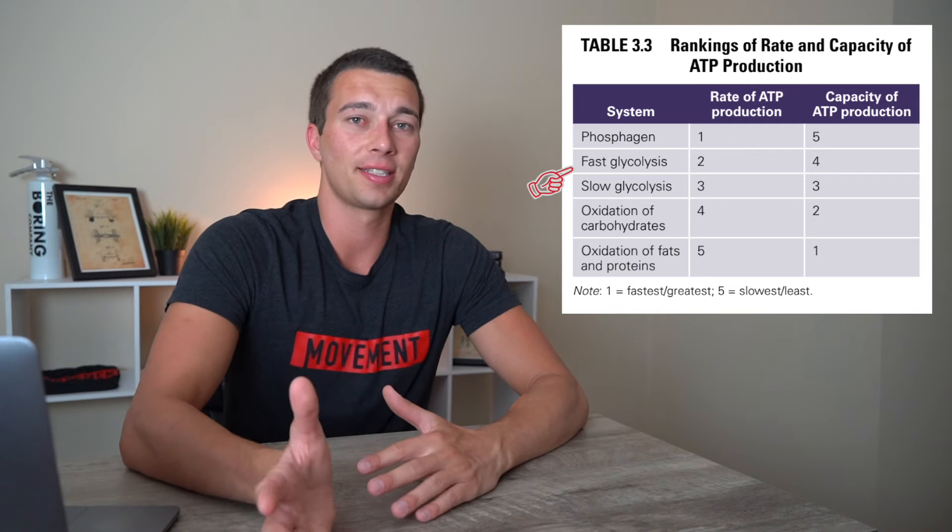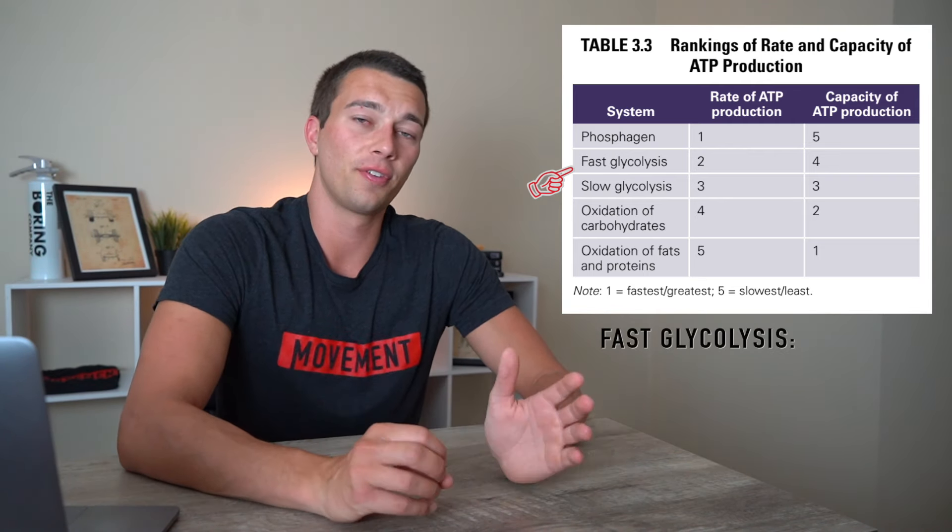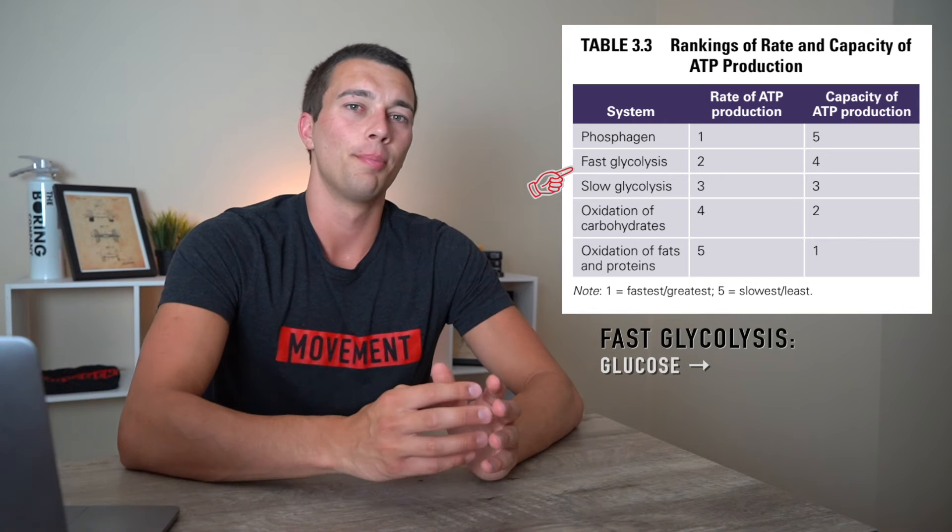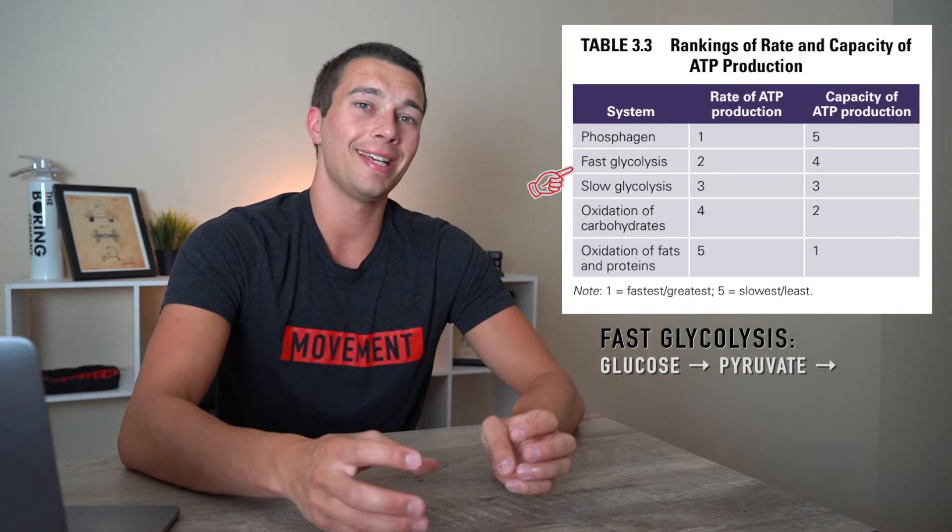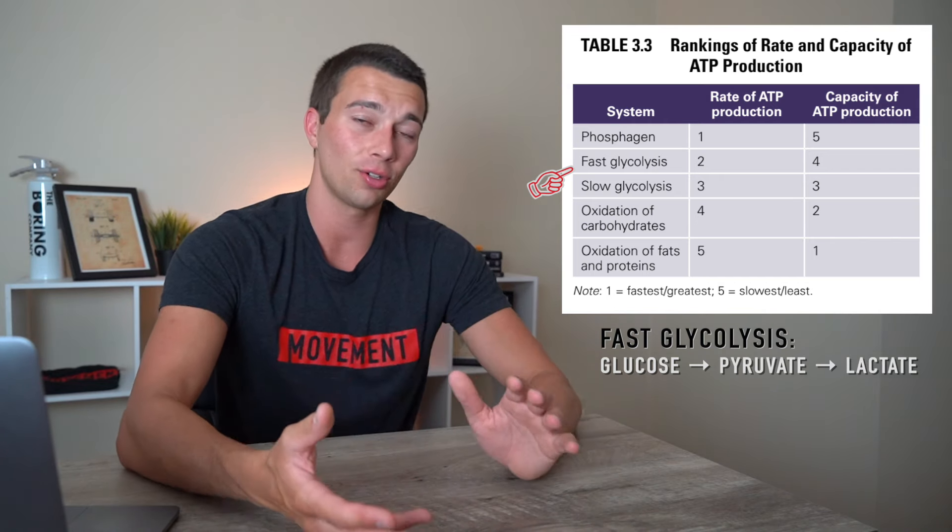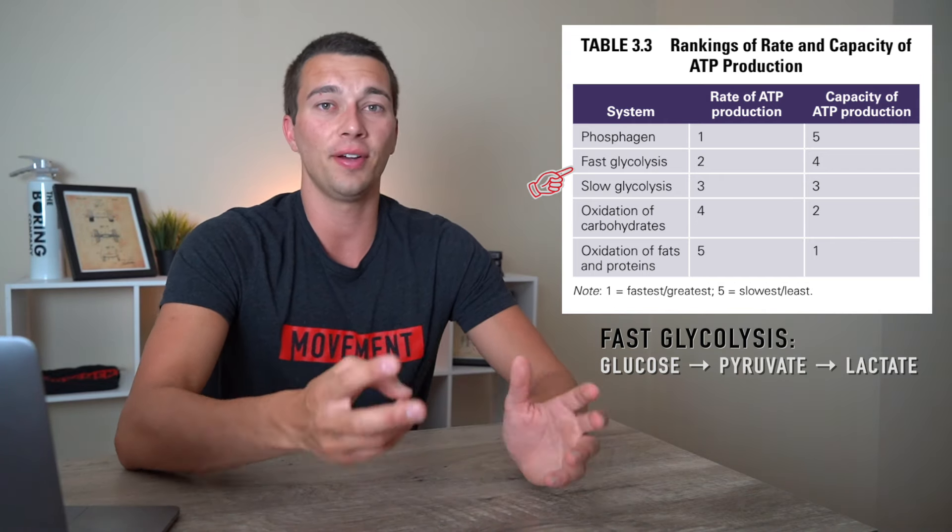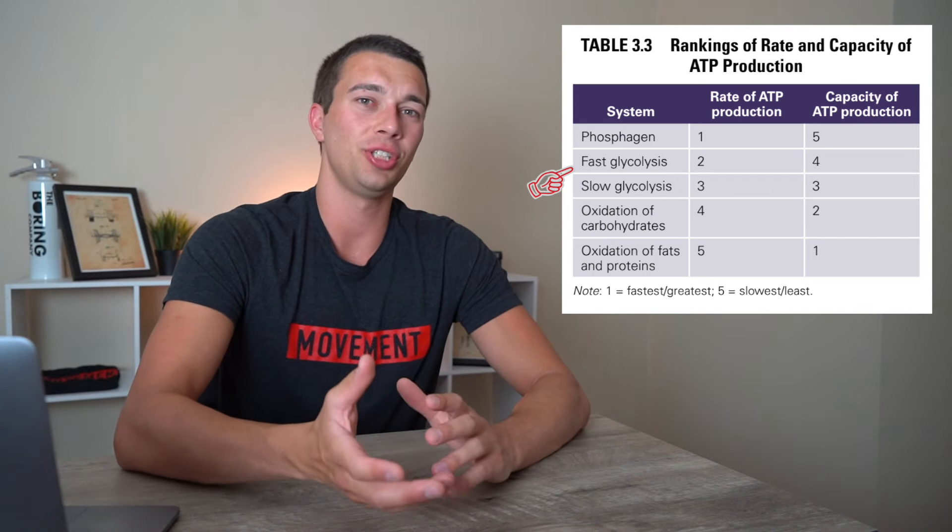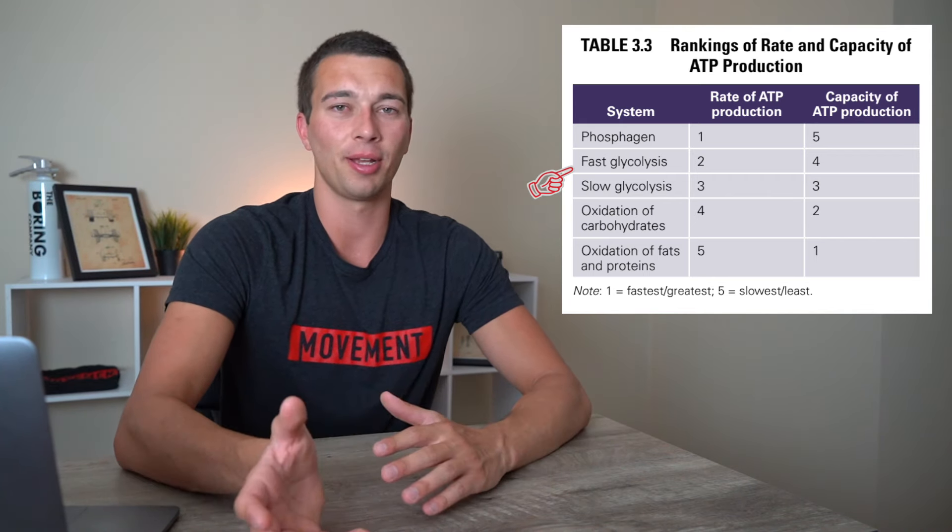The end product of fast glycolysis is going from glucose, a glucose molecule being like a blood sugar molecule, breaking that down into pyruvate and then down into lactate. So that is the system of fast or anaerobic glycolysis, and it's going to give us those two net ATP, as well as produce some high energy substrates which can then be metabolized later.